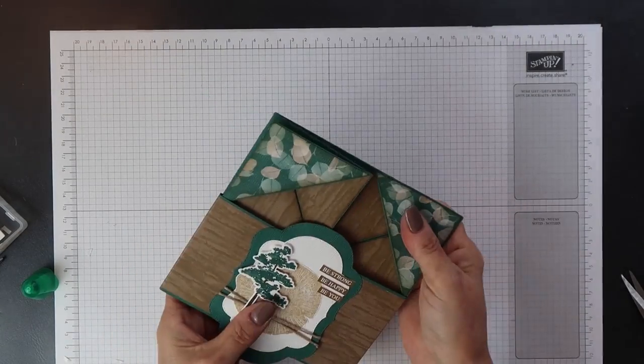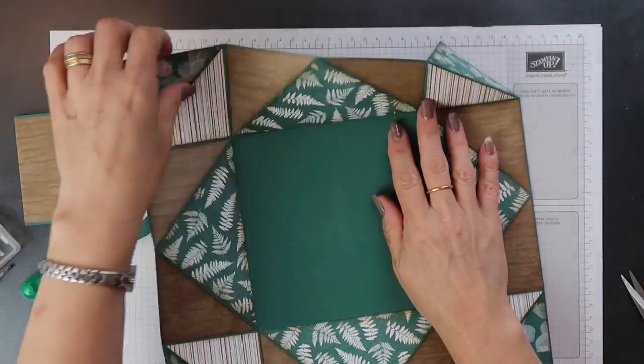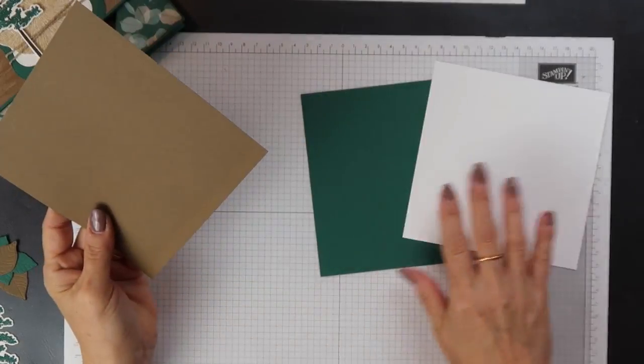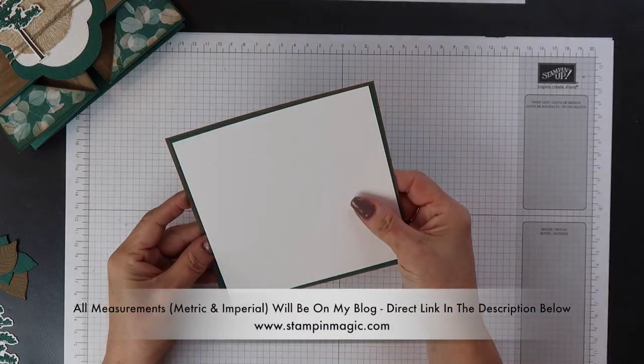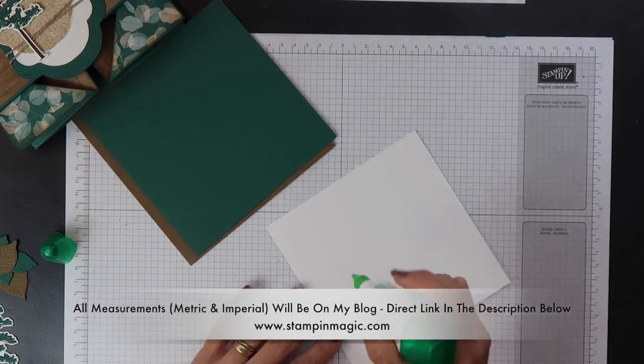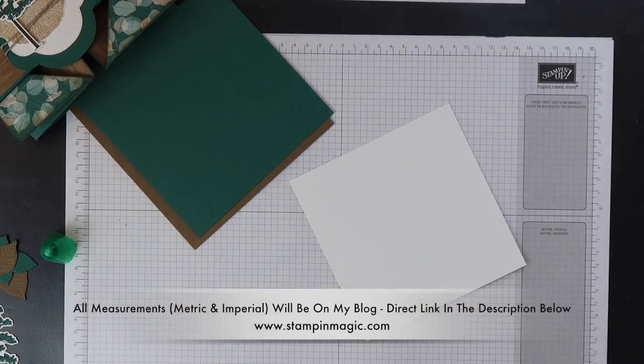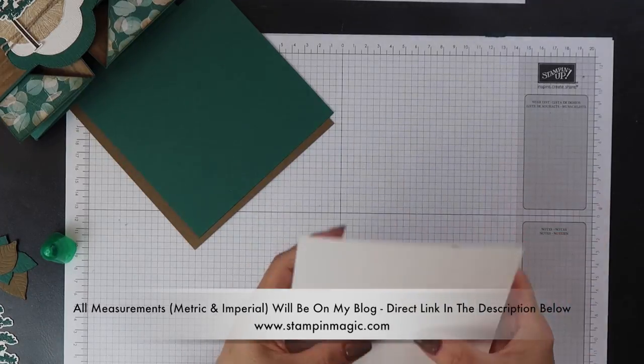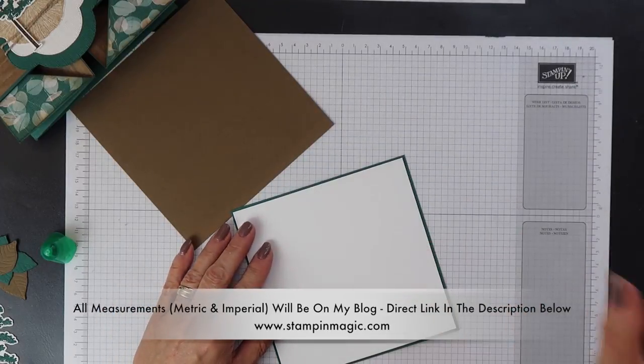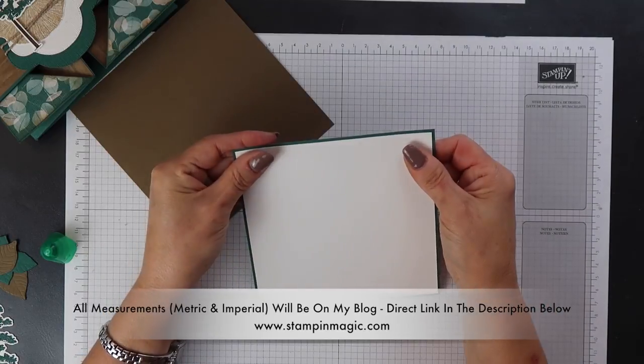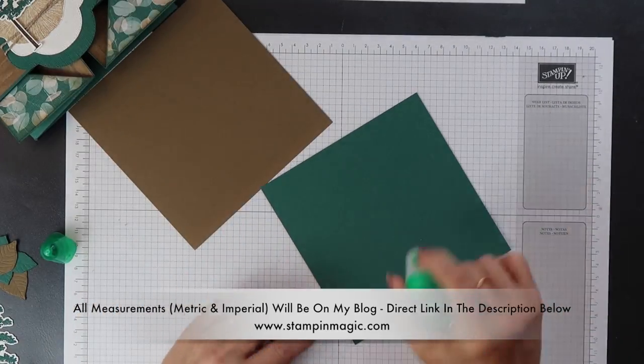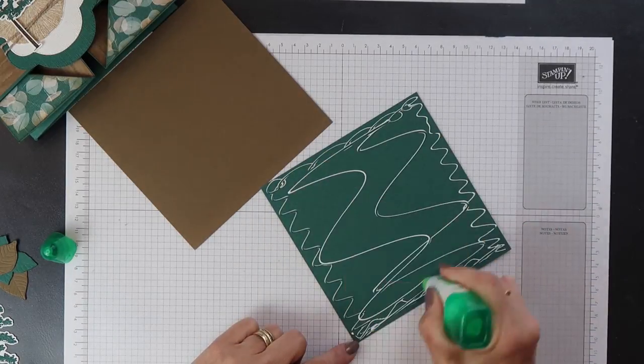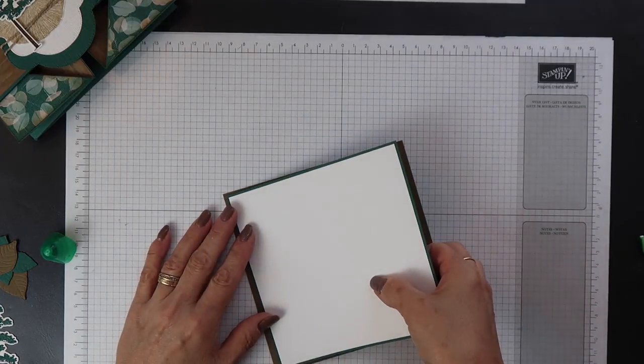The only thing we have left to do now are the inside panels. Now I have three squares of cardstock. The soft suede one is 5 and 7 eighths of an inch square, which is 14.9cm. Now you need to layer all these together.